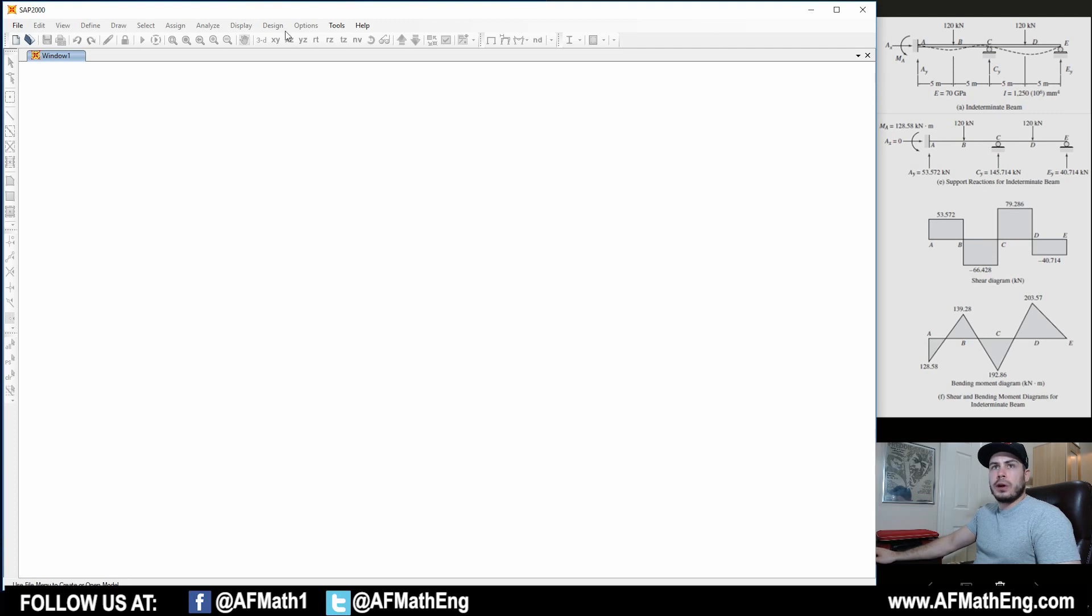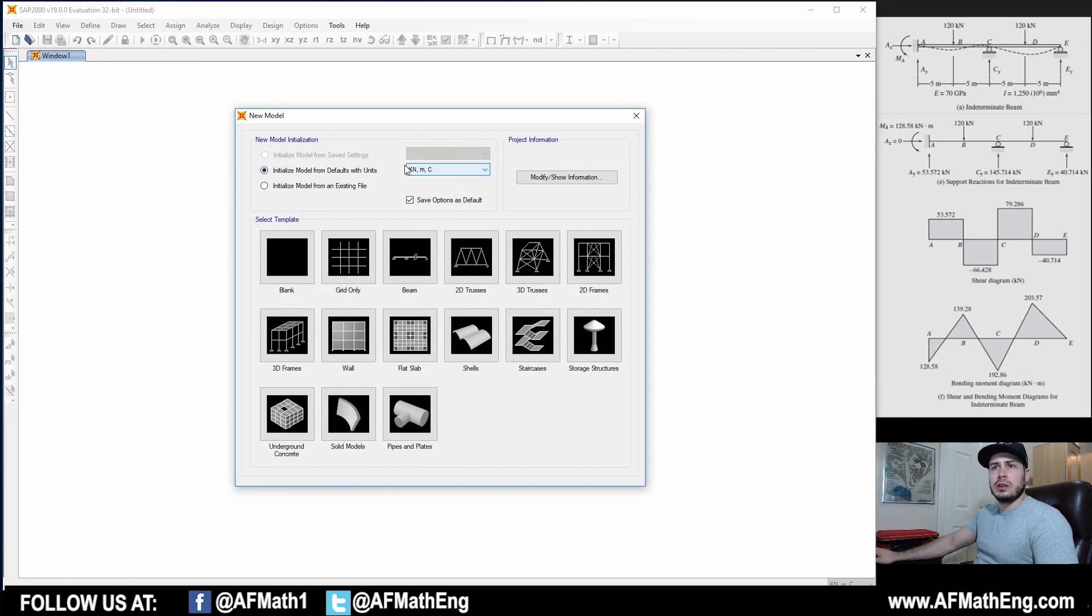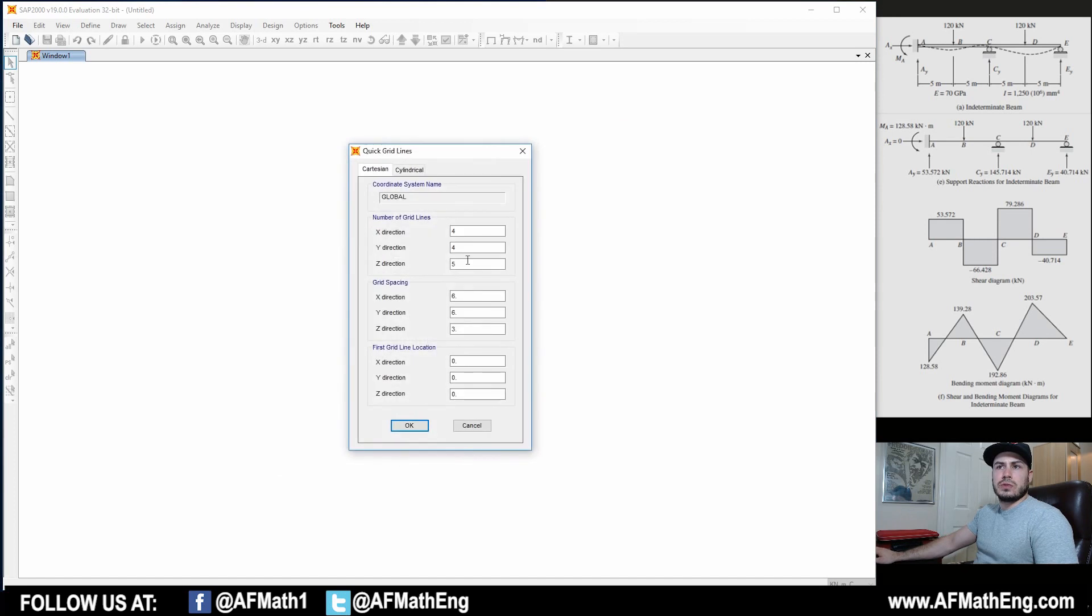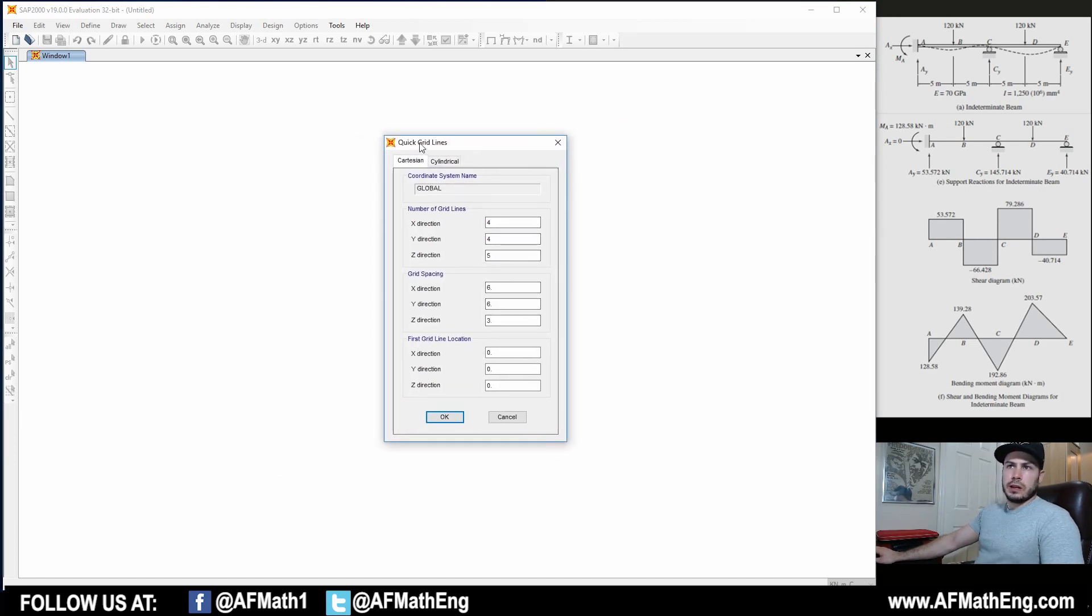So we have SAP2000 open. We're going to model this beam. Our first step is go to File, hit New Model. We're going to make sure that the units we're using in SAP are the same as the units in our problem, which they are - we have kilonewton and meter. We could model it as a beam, but I want to show you how to do it as a grid, because that's also useful sometimes. We get the screen with quick grid lines, Cartesian plane here.